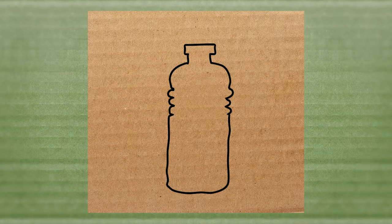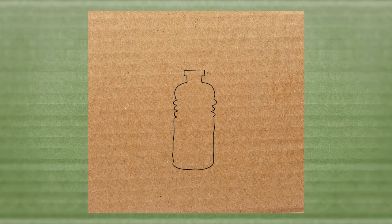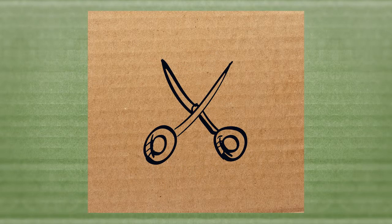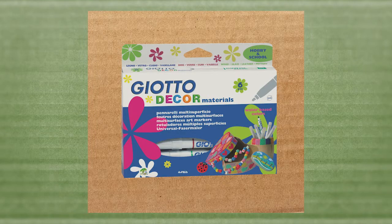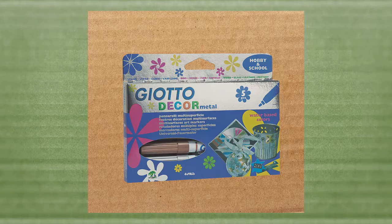A large transparent plastic bottle, a small bottle in colored plastic, scissors, Giotto Décor multi-surface materials, and Giotto Décor felt tip pens.